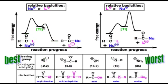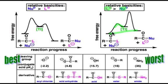If the opposite were true — if the leaving group was a stronger base than the nucleophile — the reaction would be thermodynamically unfavored. For example, if methoxide were the leaving group, it could never be replaced by chloride. It's an uphill battle: once we reach the tetrahedral intermediate, the favored direction would be to put the negative charge back on the chloride and return to the starting point.